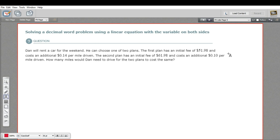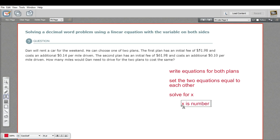What we really need to do is write equations for both plans. Then, since we want to find the point where both of the plans are going to cost the same, we set the two equations equal to each other. Finally, we'll solve for X. What is X? We want to find the number of miles where the two plans are the same, so X is the number of miles driven. That's our plan.